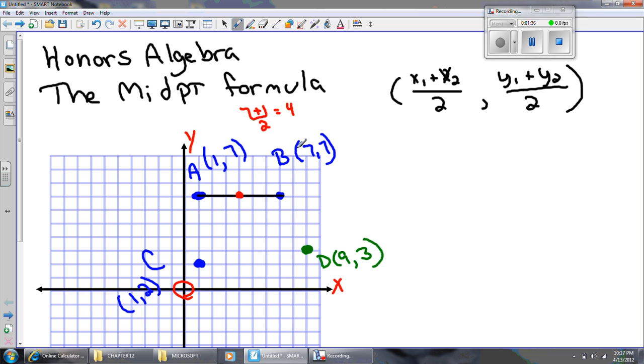But all I did was average the x's. 1 plus 7, divide by 2. And that got me the x-coordinate of the midpoint. The y-coordinate was obvious.